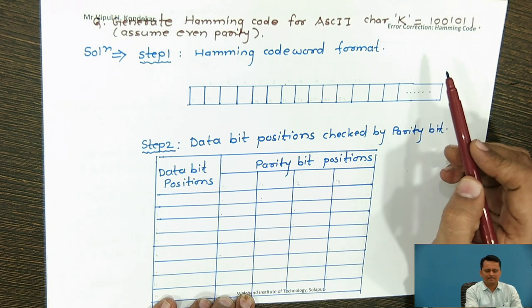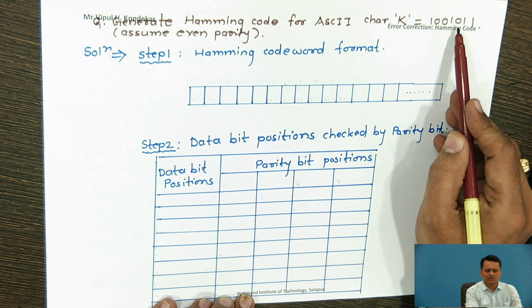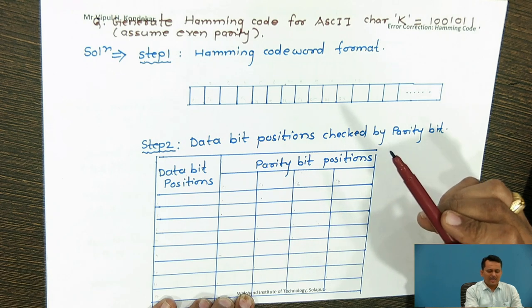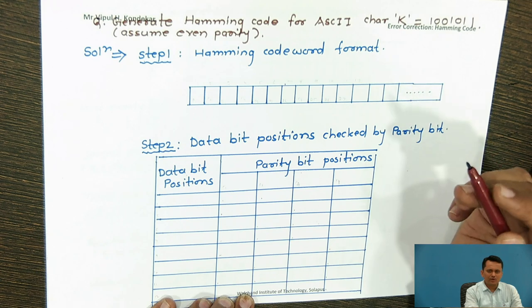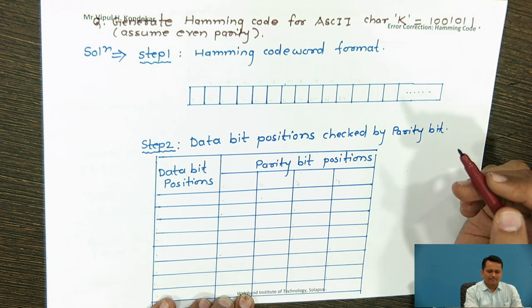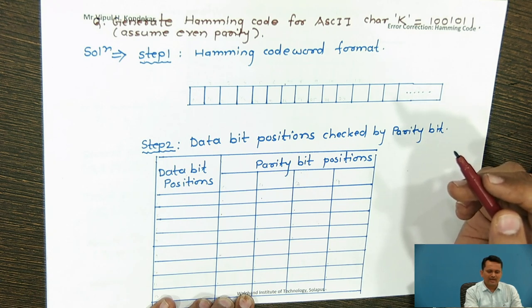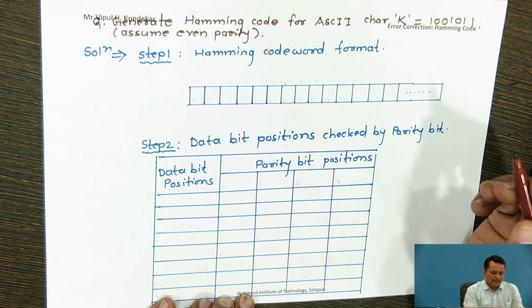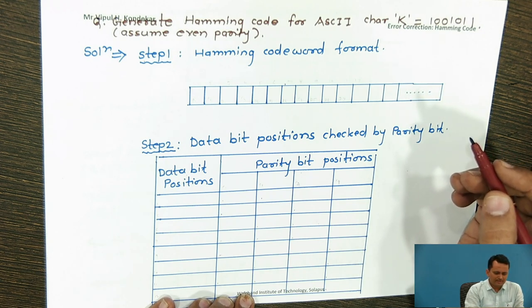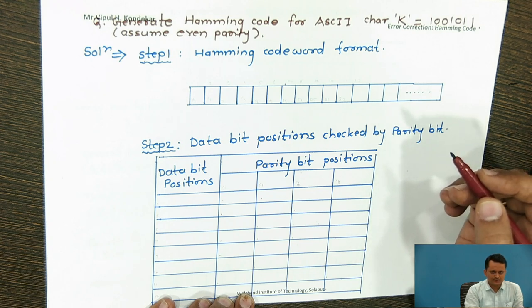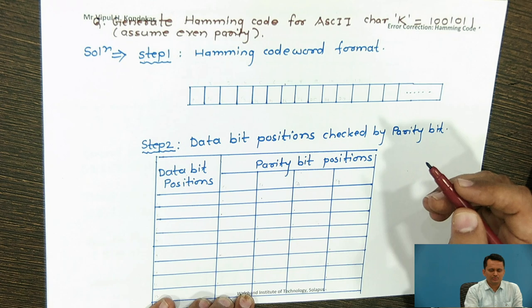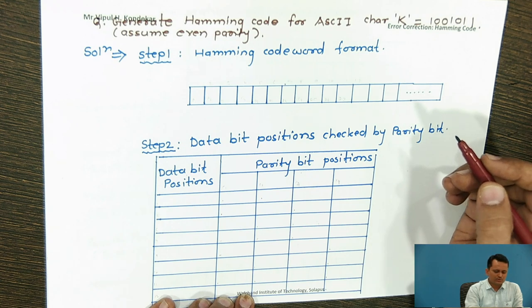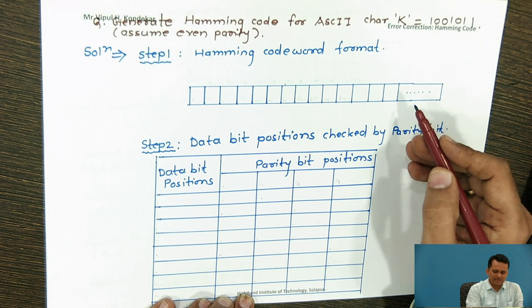Let us take one example where we want to generate Hamming code for ASCII character 'K'. Its binary equivalent is 1001011. The first step in Hamming code is that bits of the code word are numbered consecutively starting with bit one at the left. Bits that are powers of two — 2^0, 2^1, 2^2 — are check bits or parity bits.